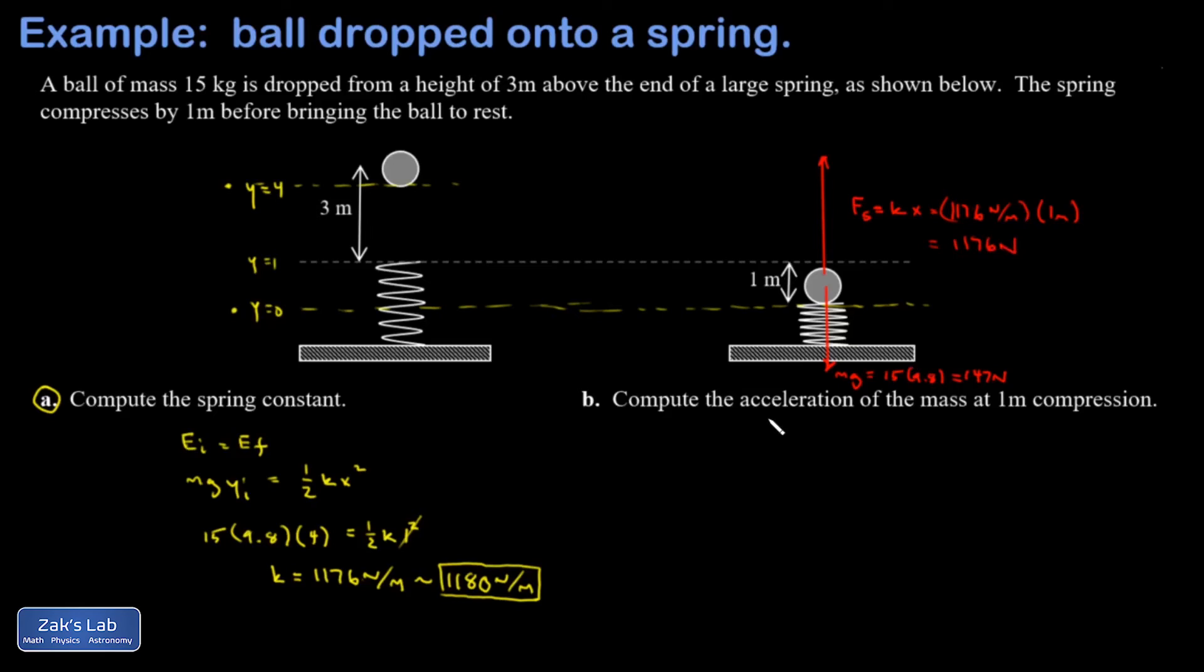All right, then I should be able to get F_net and find the acceleration. So my net upward force then is 1176 newtons minus the 147 newtons that gravity is exerting. That gives me 1029 newtons.